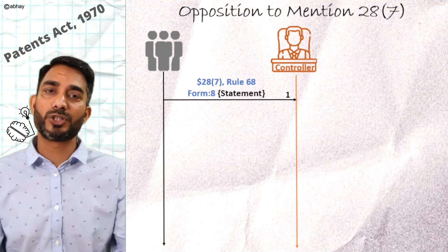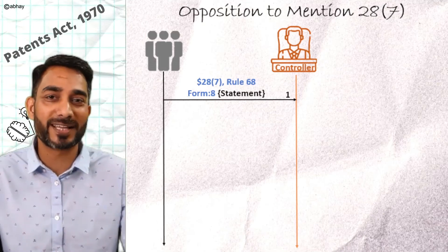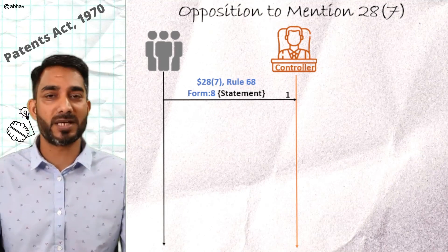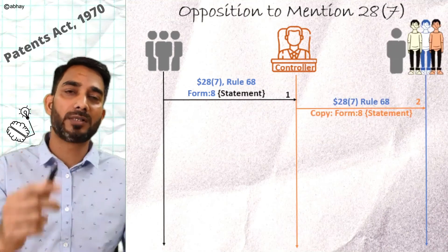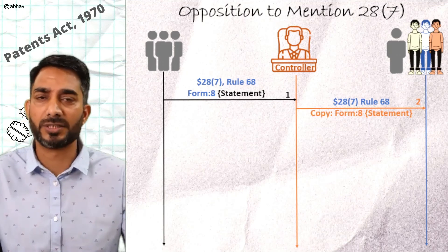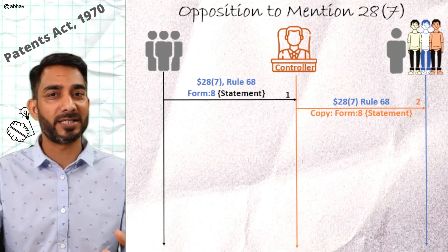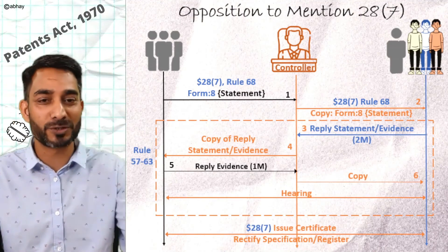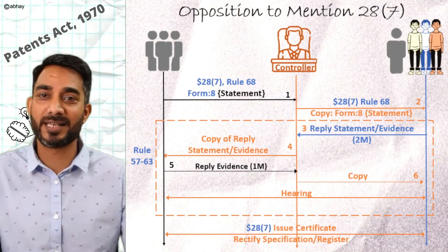They would want the controller to issue a certificate to that effect. This looks more like an opposition proceeding — upon receiving such a request from the others, the controller passes on such a request to the applicant and any other related parties as mentioned in the register. Beyond this, there are replies, responses, documents, and a hearing as per Rule 57 to 63.